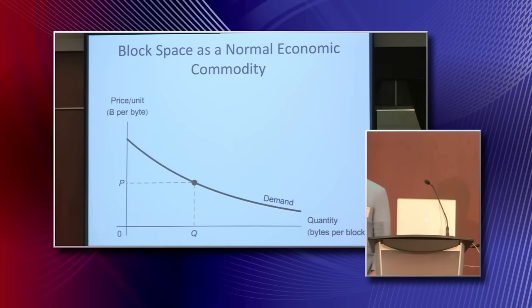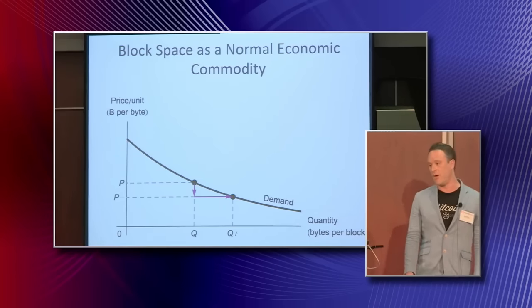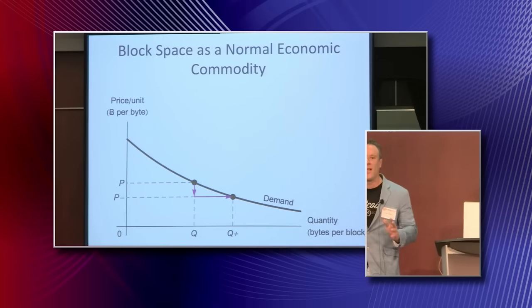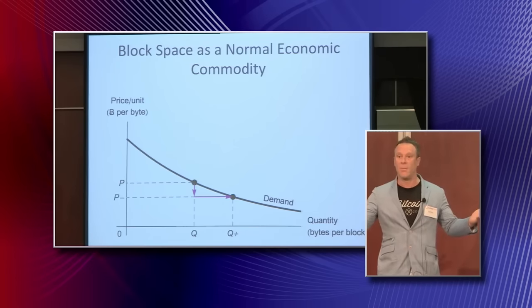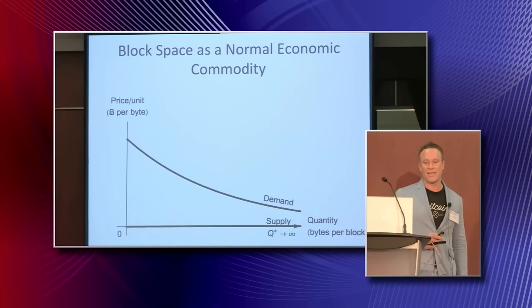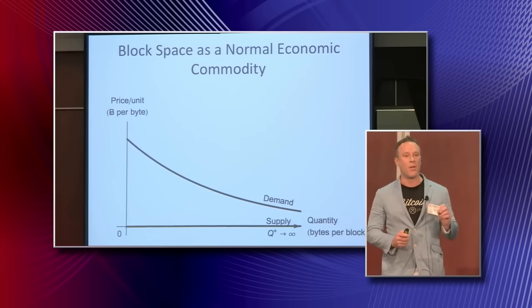So is block space a normal economic commodity? Does it satisfy the laws of supply and demand? I think everybody agrees that it satisfies the law of demand — as the unit price for writing to the blockchain decreases, more data will get written to the blockchain. But does block space also satisfy the law of supply? At first glance, it might seem that a miner could just add as many transactions as he wants to a block for free. If that were the case, the supply curve would flatline at zero, supply and demand would never meet, and we'd have a tragedy of the commons where the blockchain fills up with spam.